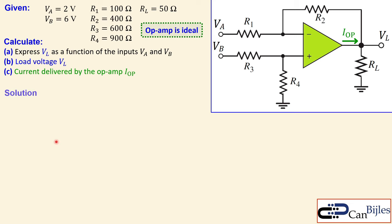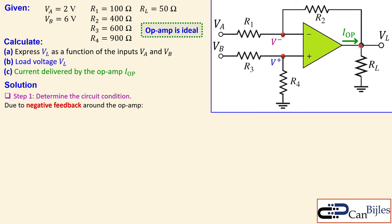Let's start step by step. Step one is to determine the circuit condition. For the op amp, we always want to know what V+ and V− are — these two voltage nodes are very important. Due to negative feedback from the output to the inverting input, the V+ node voltage is equal to the V− node voltage. It is not zero in this case, so you must be very careful — it is something we will use later.